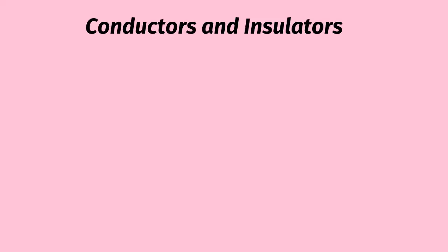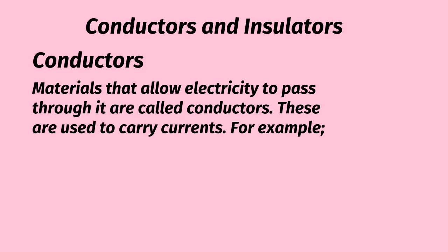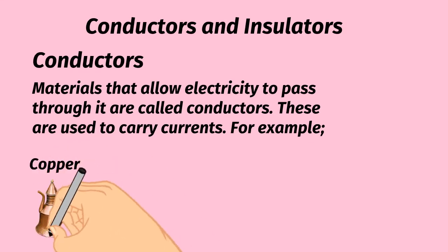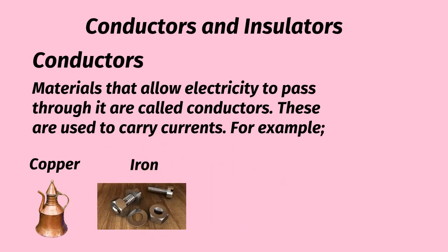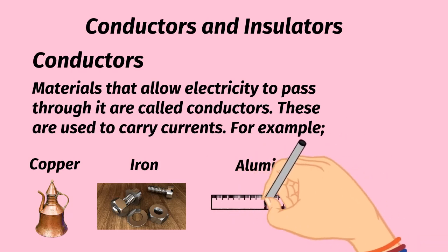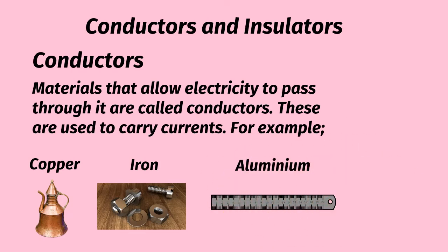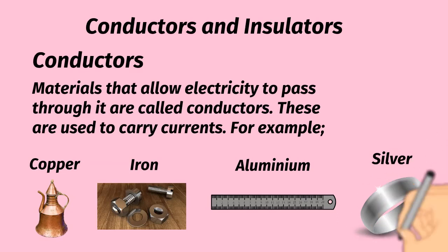Conductors and insulators. Conductors: materials that allow electricity to pass through them are called conductors. These are used to carry currents. For example: copper, iron, aluminum, silver, and gold.